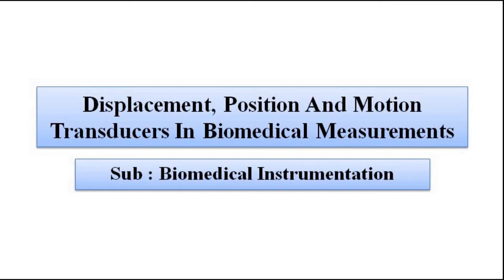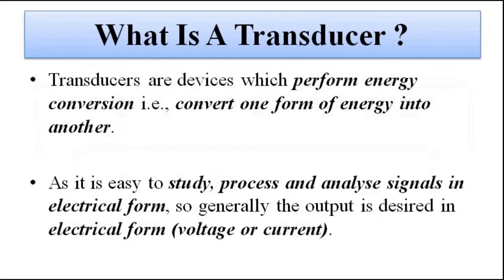These sensors or transducers are used for measurement of the movement of the various body parts or organs. Before going into detail, just have a quick look at the basic definition of a transducer. Transducers are basically energy conversion devices which convert one form of energy into another. The input to a transducer can be anything — a physical signal, a mechanical signal, a chemical or optical signal — any non-electrical quantity we convert into electrical form, voltage or current.